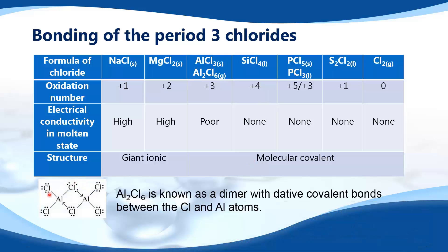Here we have the structure of Al₂Cl₆. It is known as a dimer, which is two molecules joined together. It has dative covalent bonds between the chlorine and aluminium atoms.